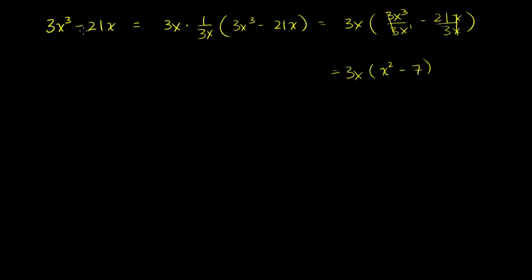And if you multiply them out, you're going to see you're going to get 3x to the third minus 21x. Now I went through all of these steps really just to show you exactly what I'm doing. But as we progress, you're going to see that your brain will just automatically say, hey, both of these are divisible by 3x. Let me factor out a 3x and then divide both of these terms by 3x to get x squared minus 7.